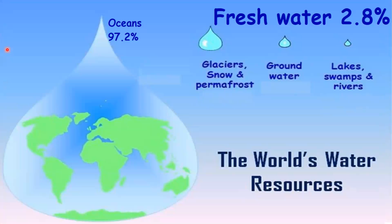Nearly 70% of the Earth's surface is covered with water, and 97.2% of that is in oceans. The balance of 2.8% is only fresh water, found in the form of glaciers, snow, and permafrost in the polar ice caps, groundwater, lakes, swamps, and rivers.